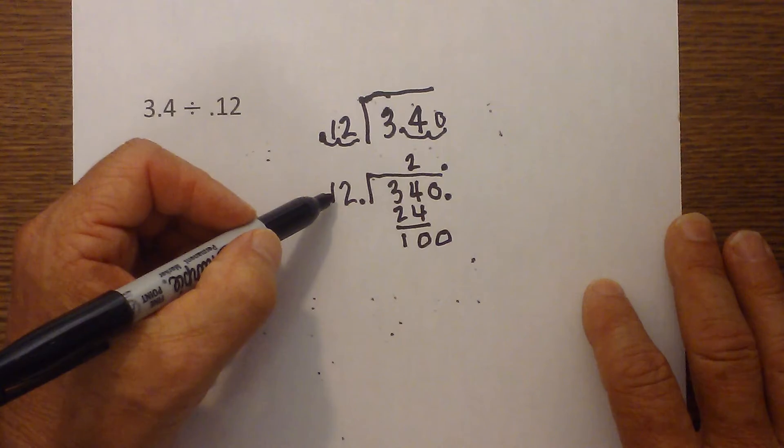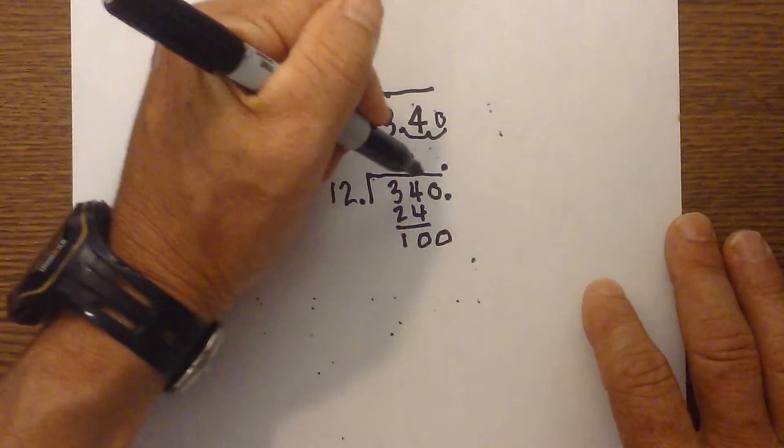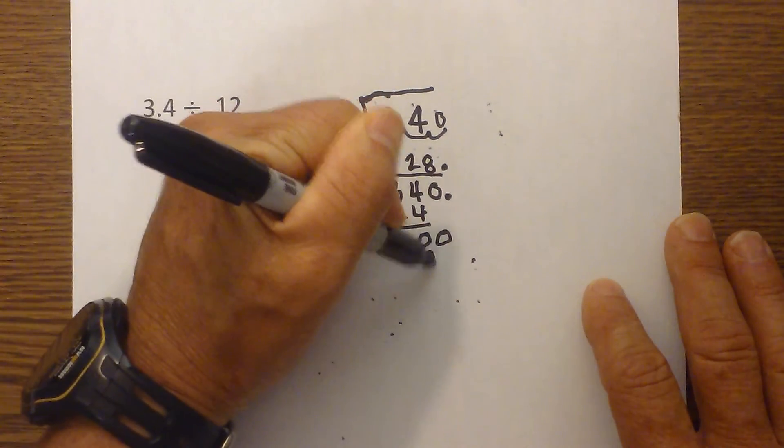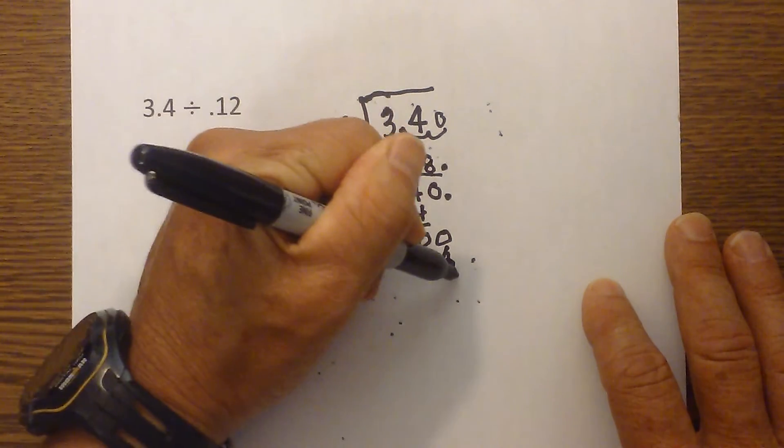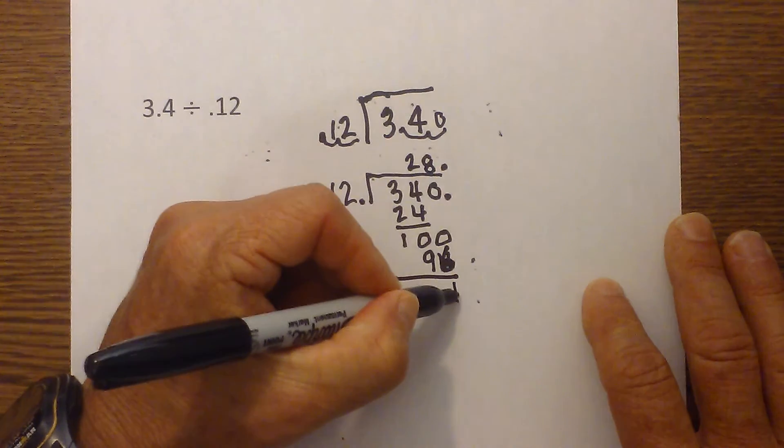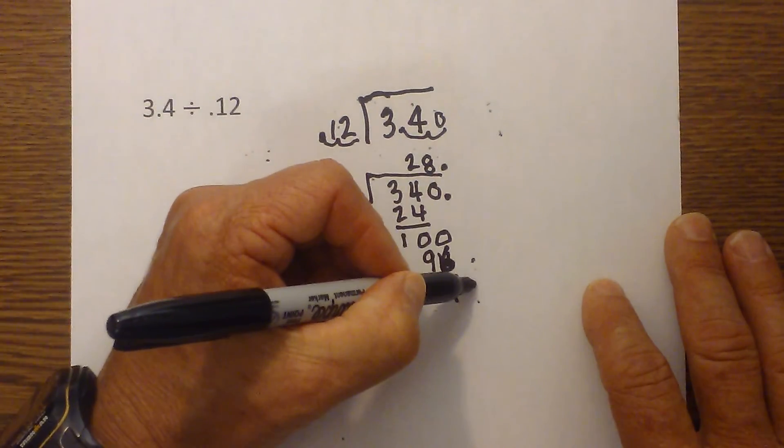12 will go into 100 eight times, and that is 96. Subtract, that becomes a 4. Bring down another zero.